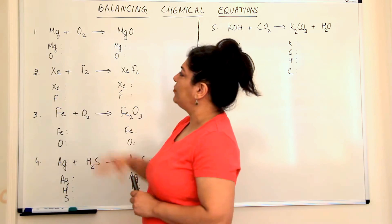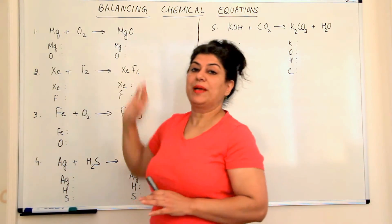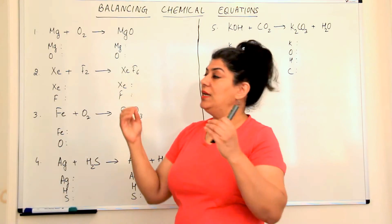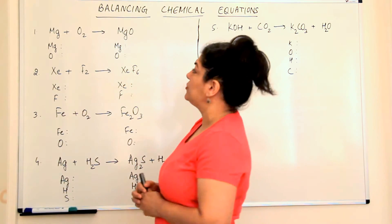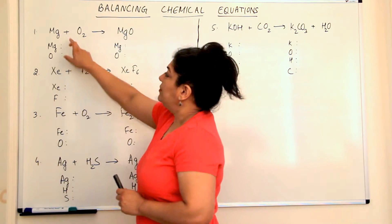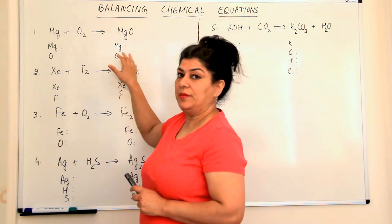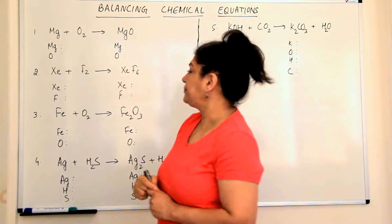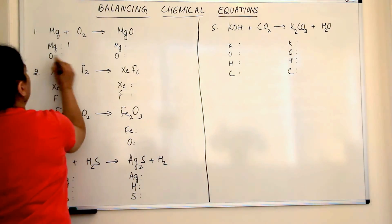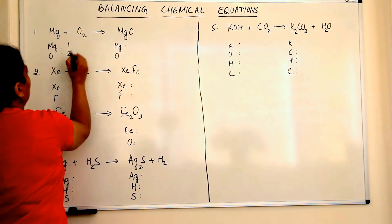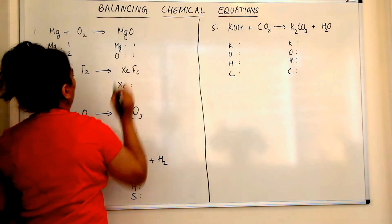For example, this is the equation: magnesium combines with oxygen to give us magnesium oxide. Magnesium and oxygen are the elements in the reactants, and magnesium and oxygen are the elements in the products. How many magnesiums are there in the reactants? One magnesium. How many oxygens? Two. How many in the products? There's one magnesium atom and how many oxygens? One.